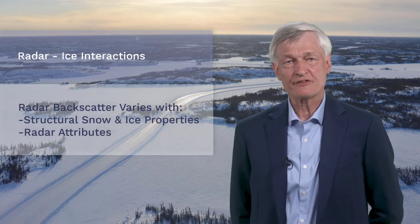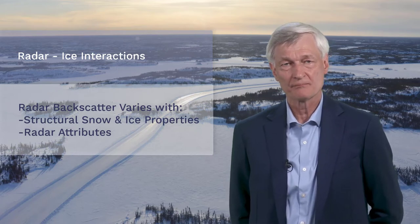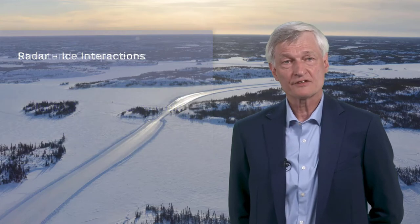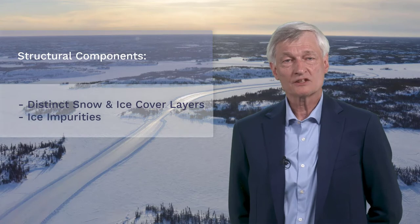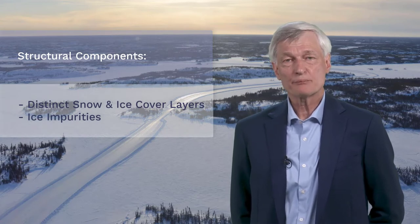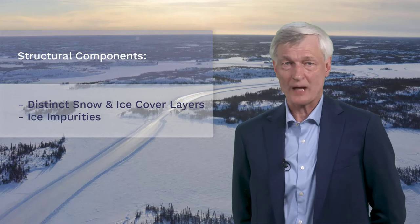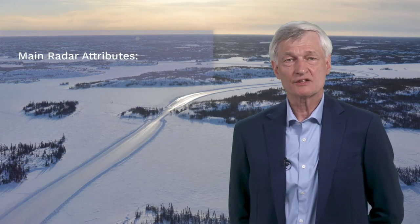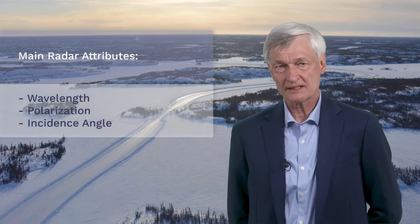Moreover, the backscatter of snow and ice varies as a function of their structural properties and the characteristics of the incident radar waves. Examples of relevant structural components include distinct snow and ice cover layers and ice impurities such as air bubbles, water pockets and cracks. The most important attributes of the incident radar waves are their wavelength, polarization and incidence angle.